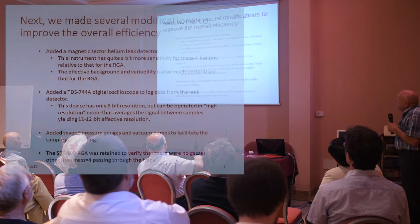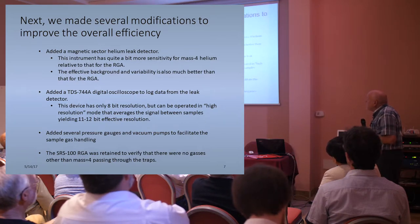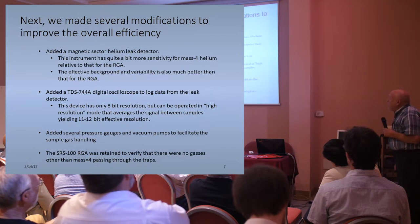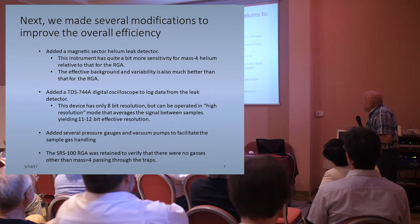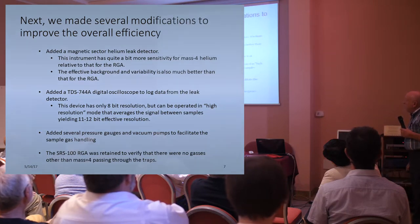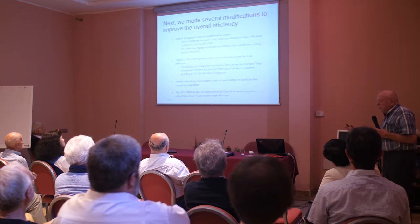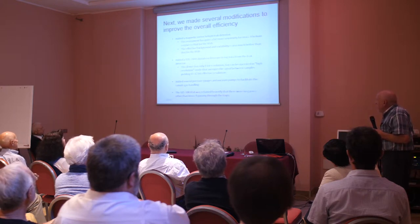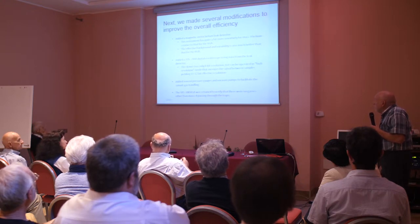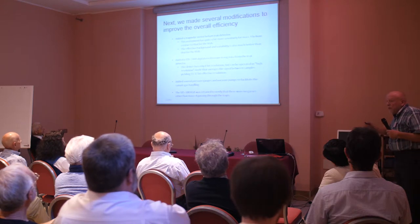We made several changes to improve the sensitivity and overall efficiency. The first thing we did was try to do the analysis for helium using a small magnetic sector helium leak detector. This has quite a bit more sensitivity and a much lower background than the RGA. We also added tectonics and oscilloscopes so we could log the data. The downside is it only has 8-bit resolution, but operated in high-resolution mode — averaging the signal between samples — you can get about 12-bit resolution. We also added more vacuum pumps, gauges, and kept the original RGA to verify no other gases besides mass-4 were getting into the measurement.